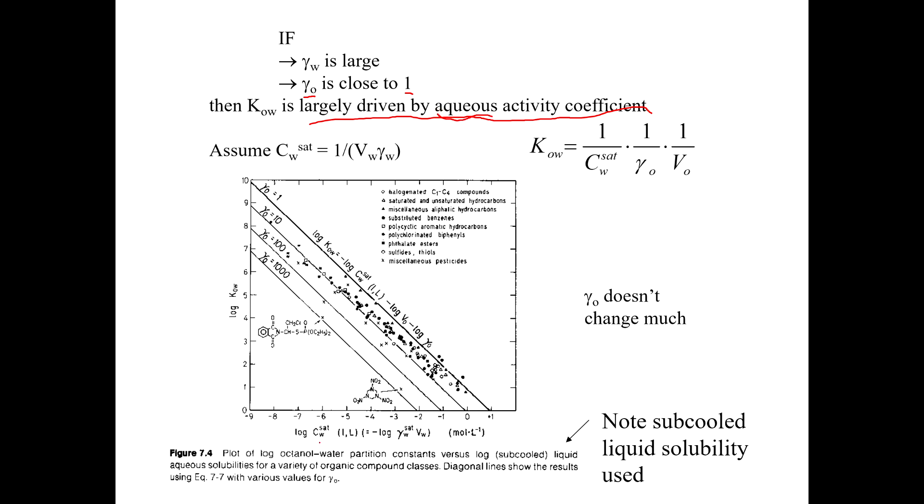So if we plot the solubility in water here, which is basically the same thing as plotting the negative of the activity coefficient, and we plot KOW versus that, we get these lines. And sort of in between these two lines is where the activity coefficient in water, excuse me, in octanol goes from 1 to maybe about 10. So still very low. And you can see the vast majority of the compounds are kind of falling right along that line or in between these two lines where, again, it's the activity coefficient in water here that is really describing what's going on with KOW.